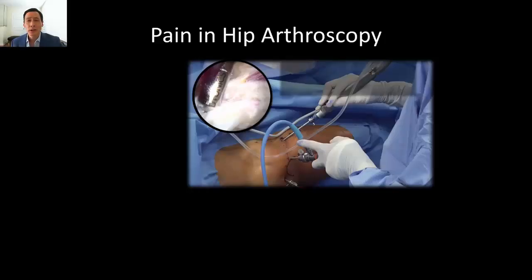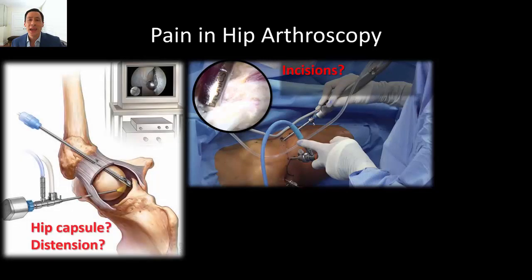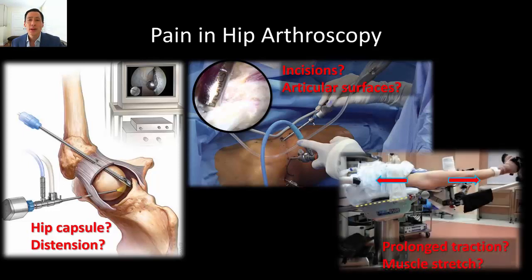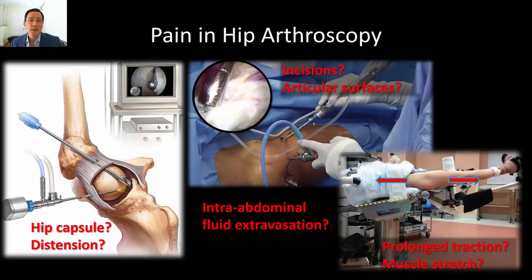Hip arthroscopy exemplifies this. Incisional pain is a relatively small component, and instead most of the trauma is to the capsular and intracapsular connective tissue and the articular surfaces of the joint. Another often overlooked component is the muscular and ligamentous pain that results from the prolonged traction these patients are placed into as part of the surgery. Even abdominal pain from fluid extravasation has been reported, although this is uncommon.